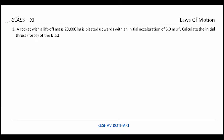Let us begin our discussion on questions of laws of motion. In this segment we are dealing with questions without considering friction. The first problem: a rocket with a lift-off mass of 20,000 kg is blasted upwards with an initial acceleration of 5 m/s². Calculate the initial thrust or force of the blast.